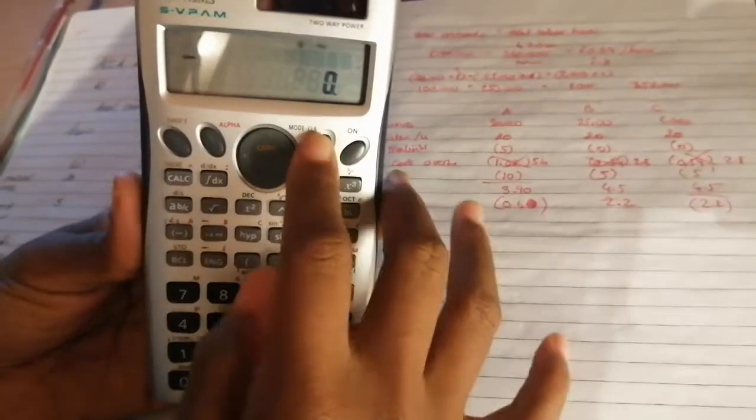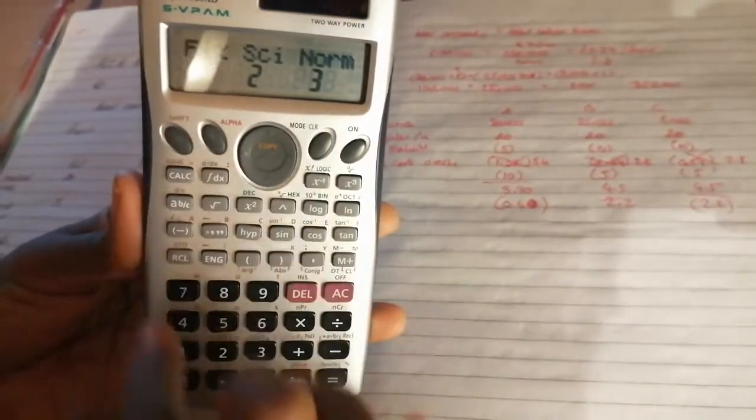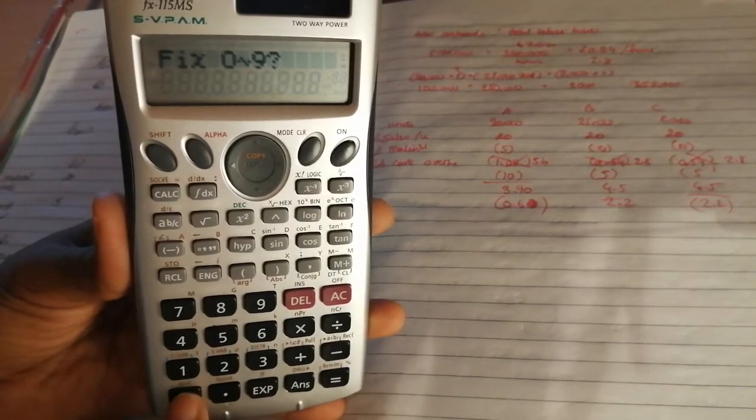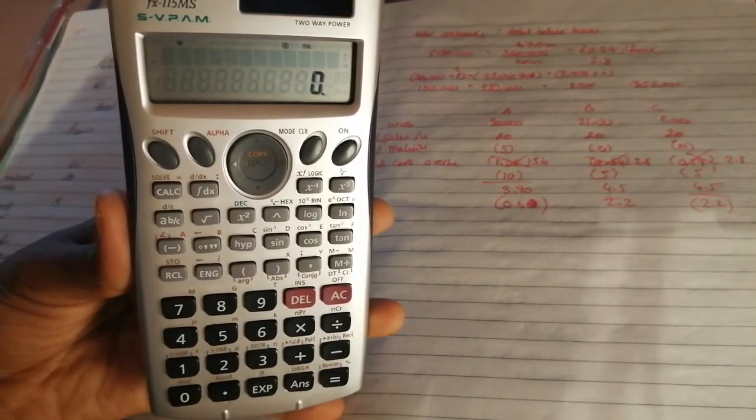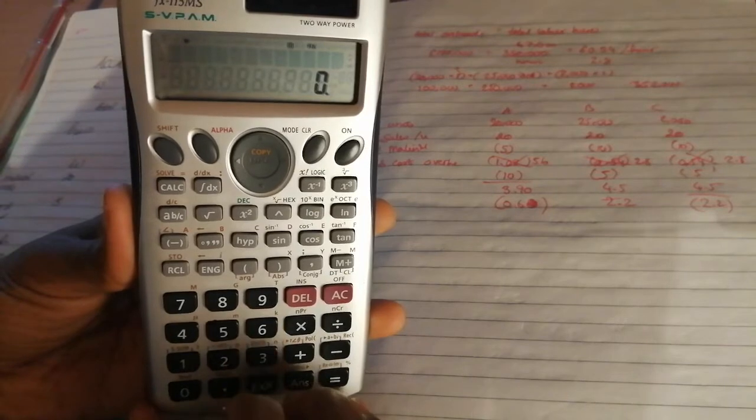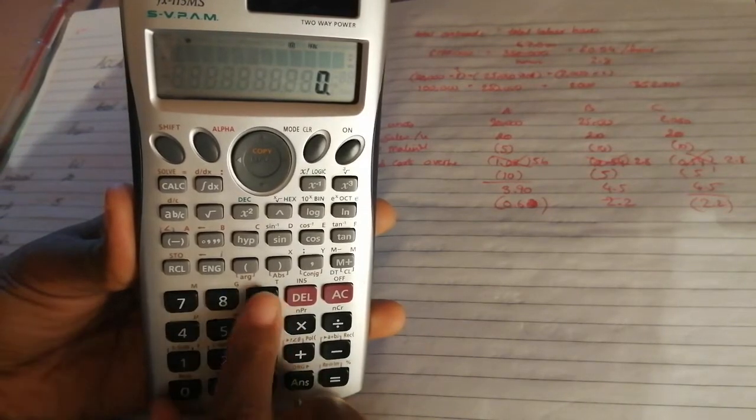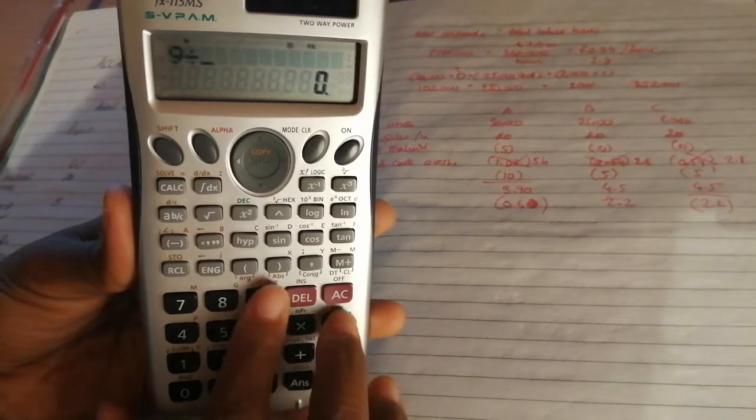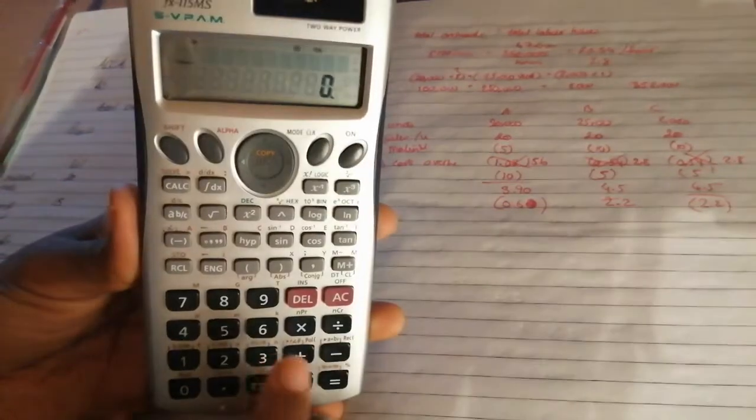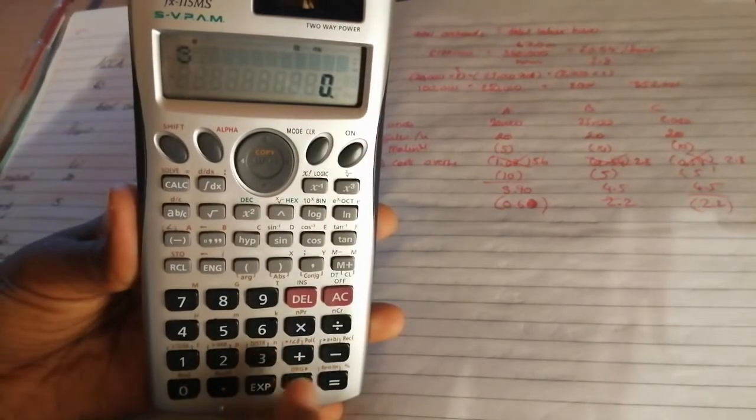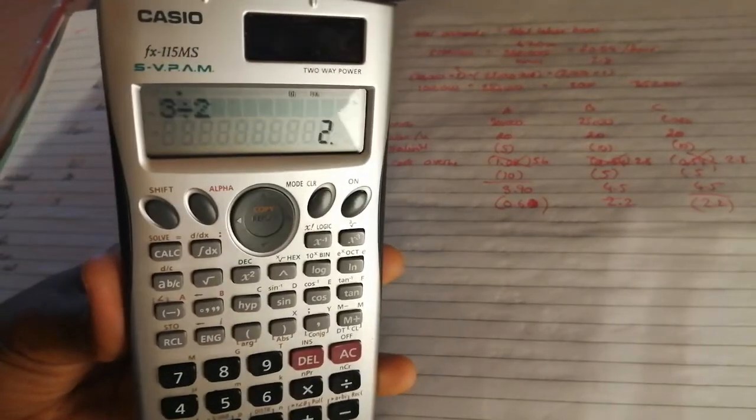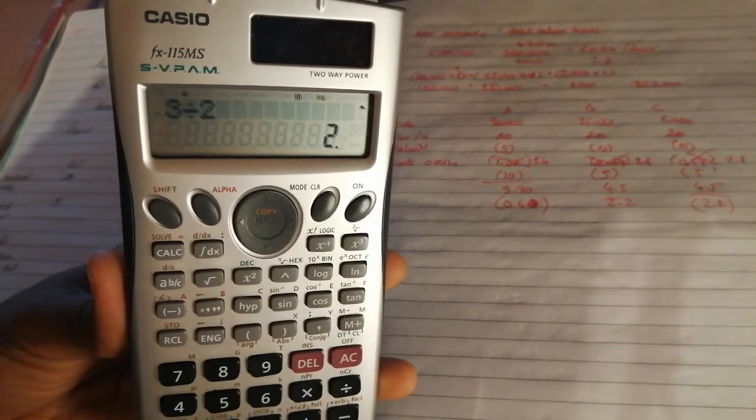Again, if you put it on fix and then you put it to zero, for example, then that will always give you just a whole number. So let's do nine divided by three, it gives you a whole number now. Three divided by two, in theory that shouldn't give you a whole number, but the calculator can only give zero decimals, so it's rounding it up for you automatically.